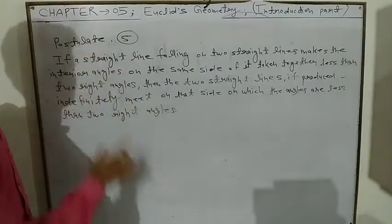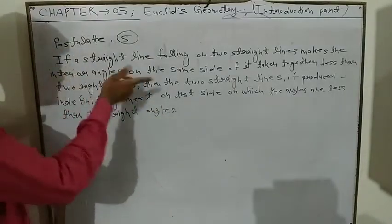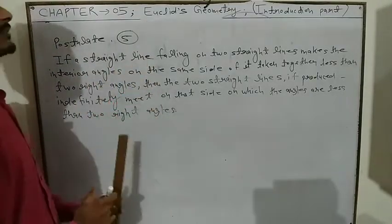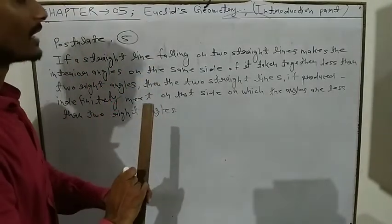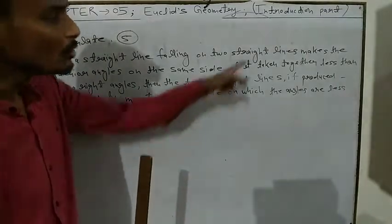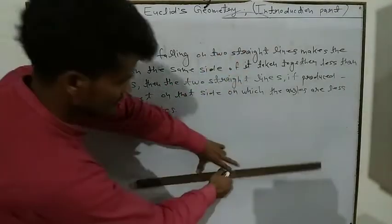First, let's look at the first diagram. If a straight line is falling on two straight lines...